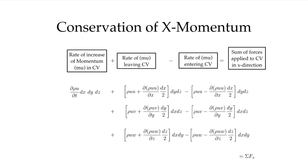The rate of increase of momentum — mass times the u-component of velocity in the control volume — is the time derivative of rho u times the volume dx dy dz. The rate at which it's leaving involves the three outward-facing faces, written as positive terms for x-faces, y-faces, and z-faces. The faces entering the control volume carry a negative sign, corresponding to the minus dx over 2, minus dy over 2, minus dz over 2 distances from the center.